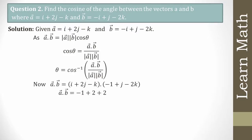Using unit vector dot products: i·i = 1, j·j = 1, k·k = 1. So a·b = (1)(-1) + (2)(1) + (-1)(-2) = -1 + 2 + 2 = 3.